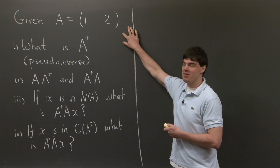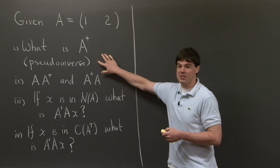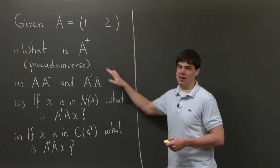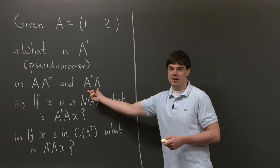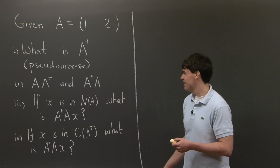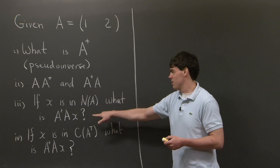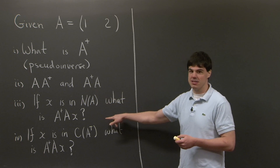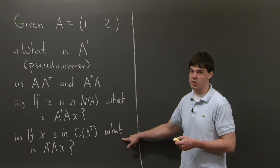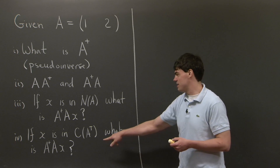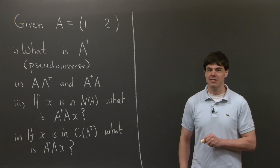Given a matrix A which is not square — so it's just [1, 2] — first, what is its pseudo-inverse? I'm using A+ to denote the pseudo-inverse. Then secondly, compute A+A and AA+. Thirdly, if x is in the null space of A, what is A+A acting on x? And lastly, if x is in the column space of A transpose, what is A+Ax? I'll let you think about this for a bit and I'll be back in a second.